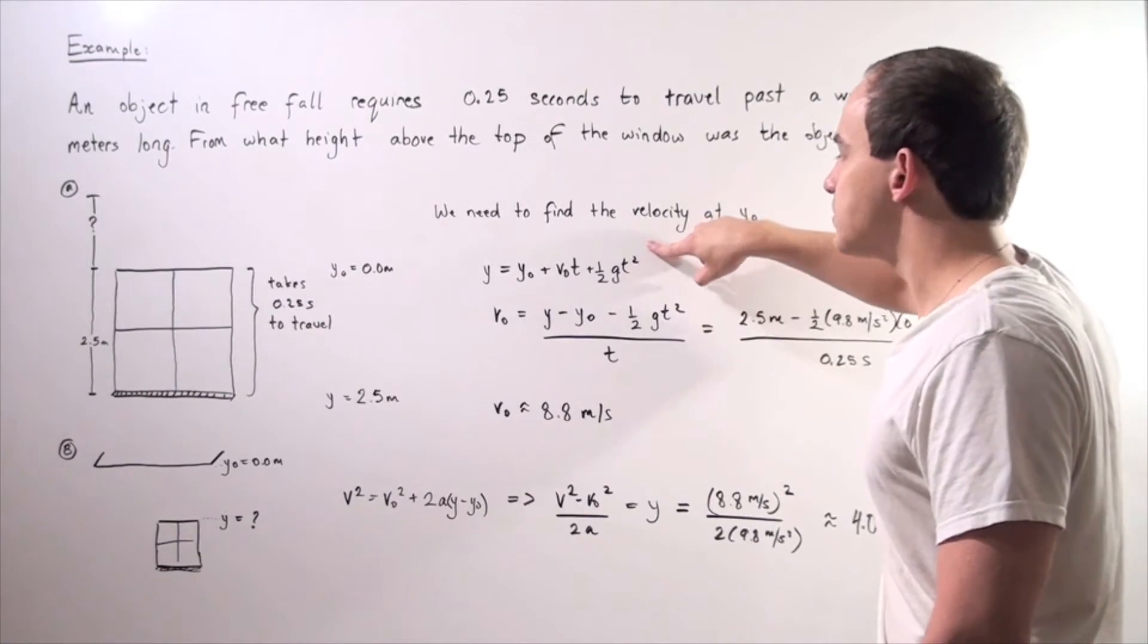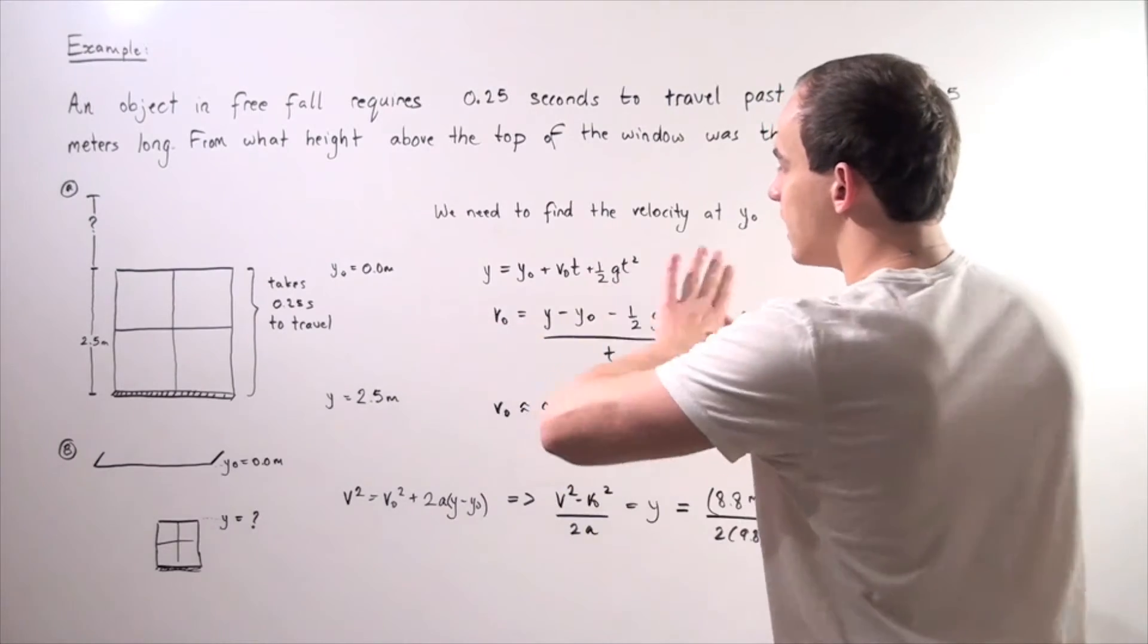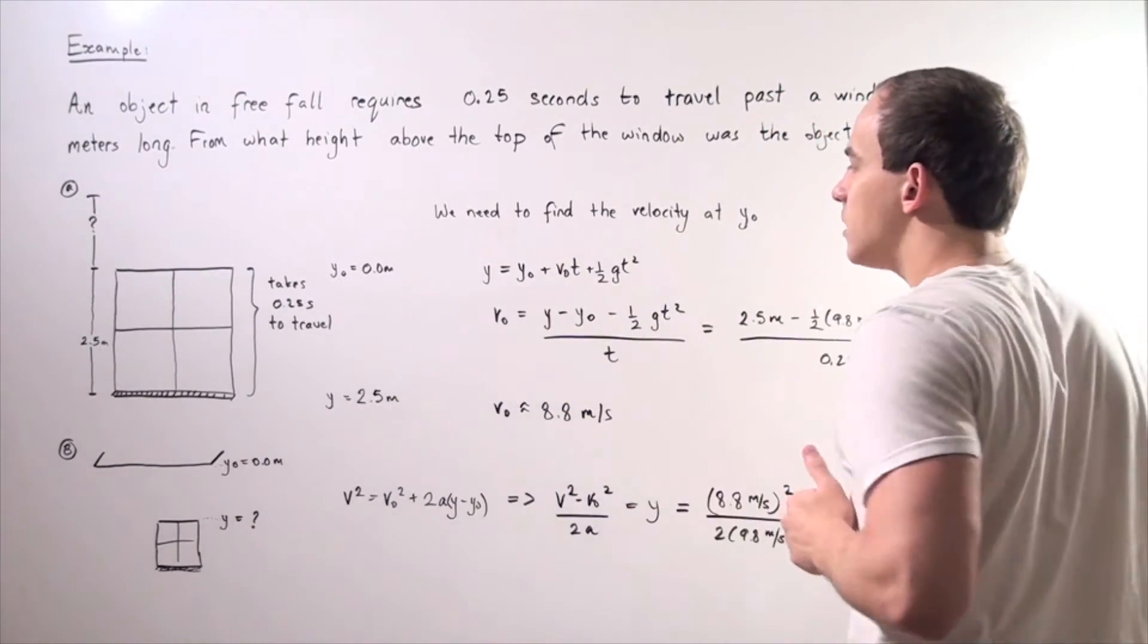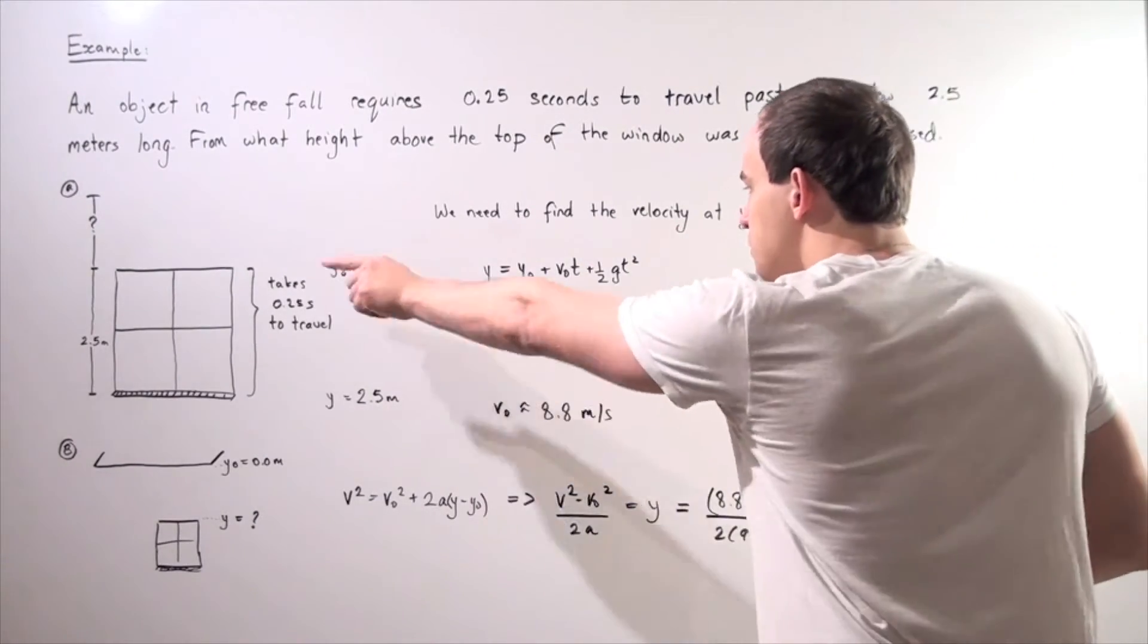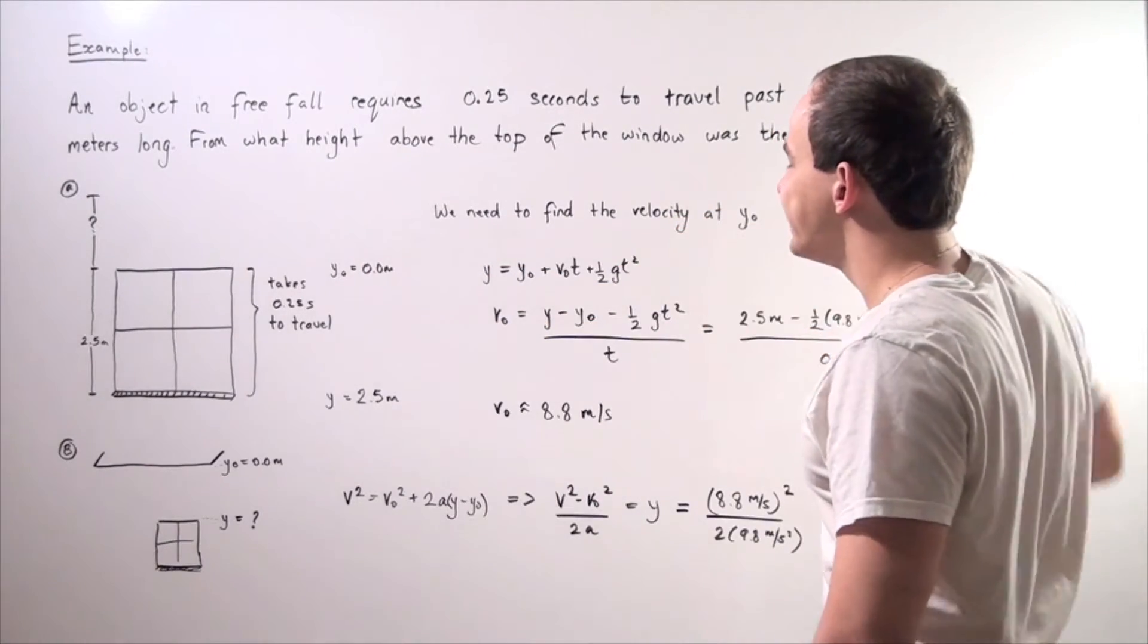So let's rearrange our equation. Let's place our initial velocity on one side and everything else on the other side. Then we divide both sides by our time.